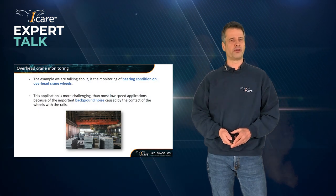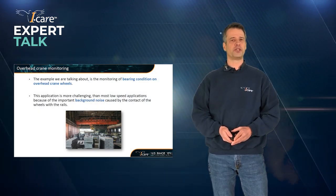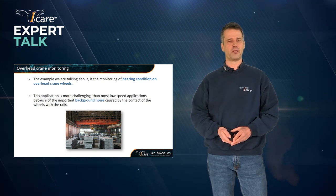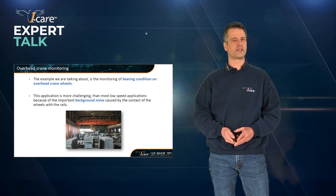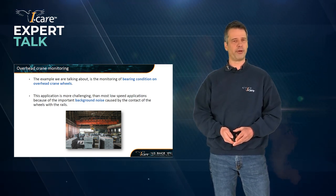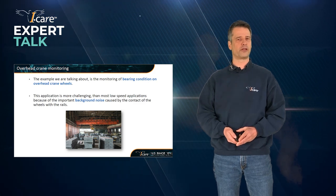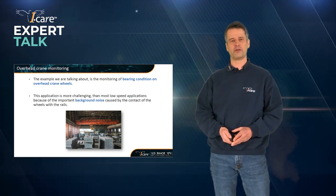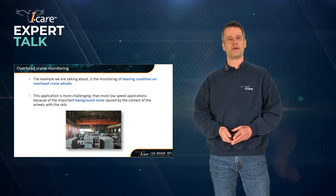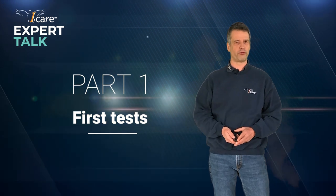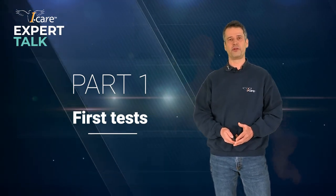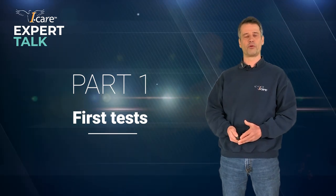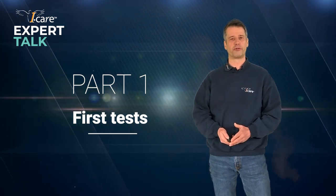The example we're talking about here is the monitoring of bearing conditions on overhead crane wheels. Monitoring bearing defects on overhead crane wheels is even more difficult than standard low-speed applications because we have a lot of background noise that is actually caused by the contact of the wheels of these overhead cranes with the rails. The presentation is split in three parts. In the first part, I will explain how we performed the first tests that gave us the opportunity to look at which type of measurements allowed us to perform this monitoring.